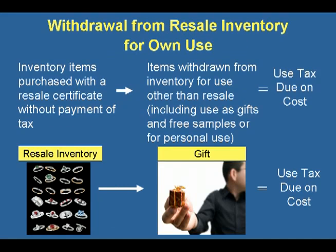As a seller of tangible personal property, you are entitled to purchase property that you plan to resell without payment of tax. However, if you remove items from resale inventory and make a use of the property rather than reselling the property, you owe tax on your purchase price of the property. For example, if you give away merchandise as a gift or use the property yourself, you owe tax on the purchase price of the property.